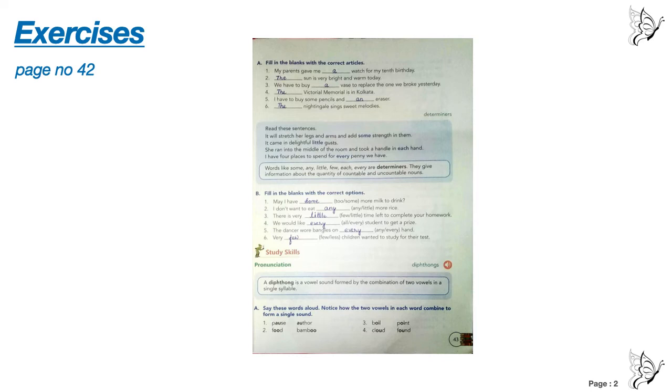Number one, my parents gave me a watch for my 10th birthday. Number two, the sun is very bright and warm today. Number three, we have to buy a vase to replace the one we broke yesterday. Number four, the Victoria Memorial is in Kolkata. I have to buy some pencils and an eraser.